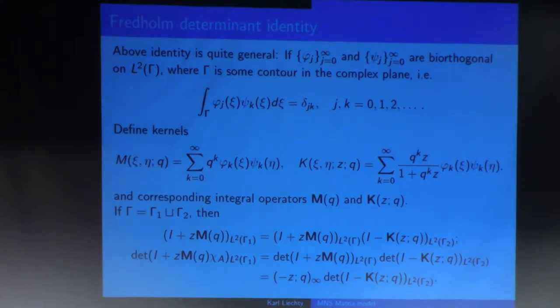So that's, again, an identity of operators, and if we take determinants, then I find the determinant of I plus Z on L2 of the one contour is the same as I plus Z times M on the big contour, I minus K on the remaining contour. And again, since I have a bioorthogonal system, the determinant on the big contour is easy. It's exactly the same Q-Pochhammer infinite product. And then I'm left with a determinant on the other contour. So this gives us some kind of a way to change. If I have a determinant on one contour, and maybe I don't like that contour very much, then maybe I can switch it to another one.